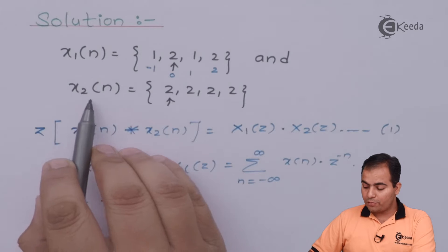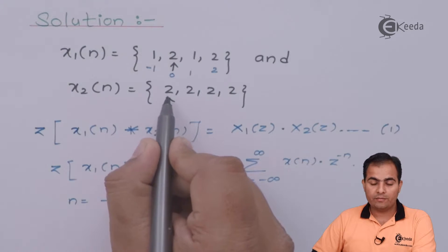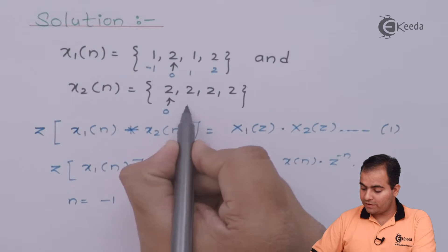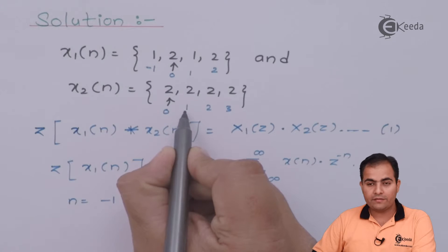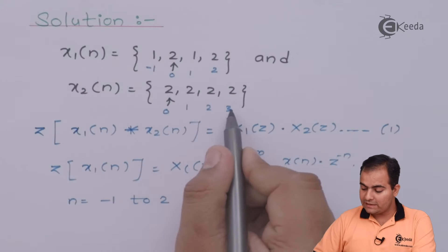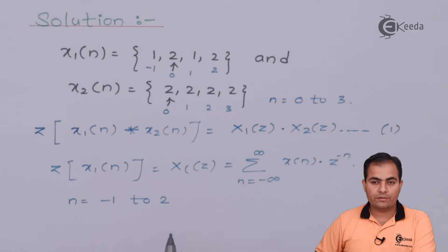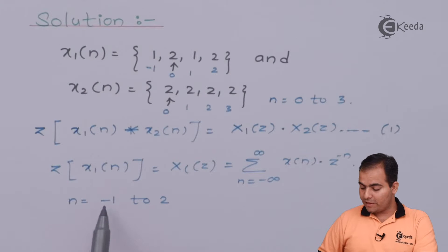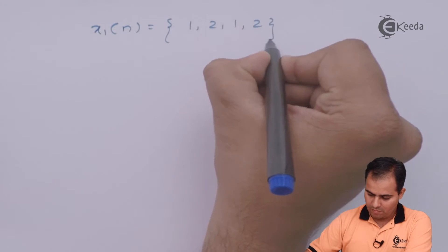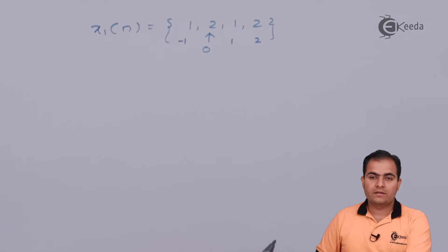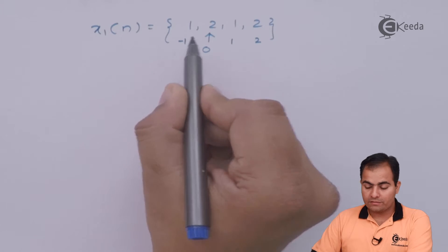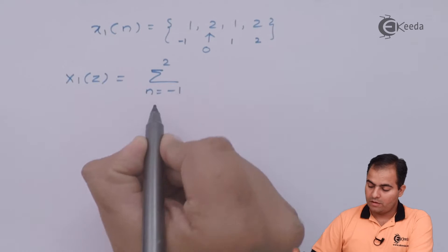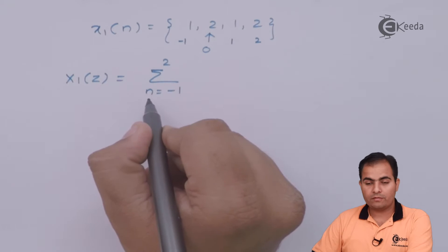For X2(n), the arrow is marked on the leftmost element, meaning the origin is placed on the leftmost sample. So all remaining samples are on the right-hand side at positive instants 1, 2, and 3. At instant 1 we have amplitude 2, at instant 2 we have amplitude 2, and at instant 3 we have amplitude 2. In this case n varies from 0 to 3, so we will apply Z-transform over that range. For X1(n), the summation changes from minus 1 to 2.